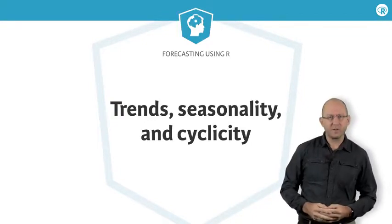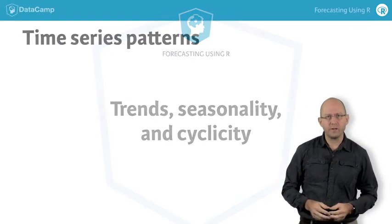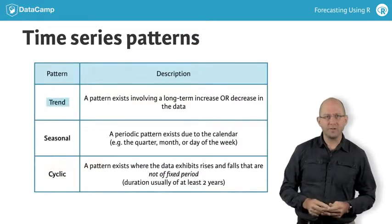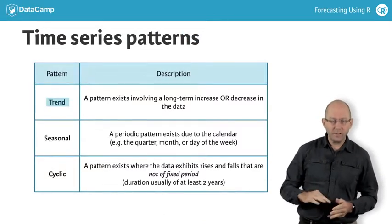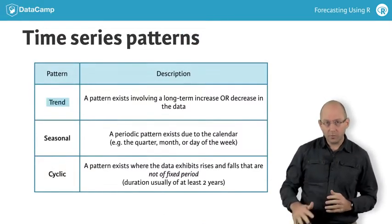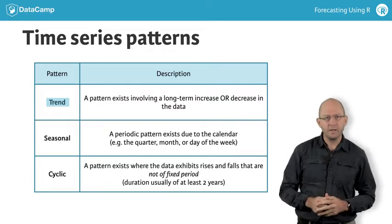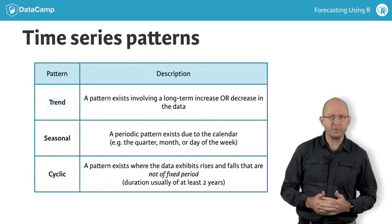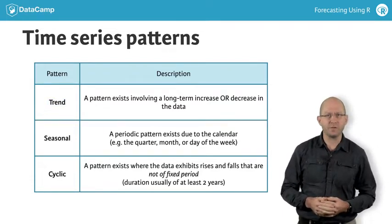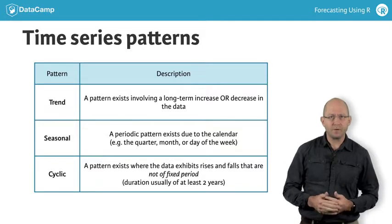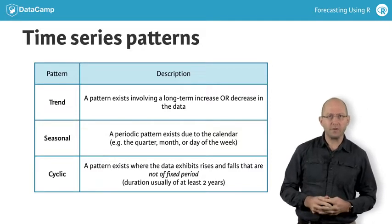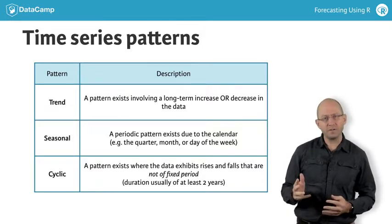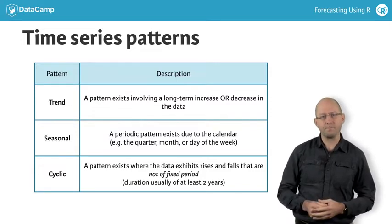Some time series patterns occur so frequently that we give them names. A trend occurs when there is a long-term increase or decrease in the data. This is deliberately a little vague, as a trend is not a well-defined mathematical term. But if I talk about a trend, I mean a general tendency for the time series to go up over time or down over time.